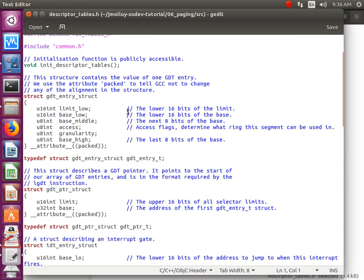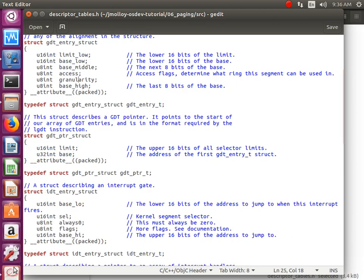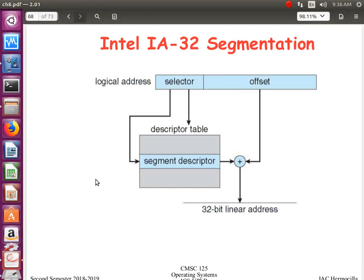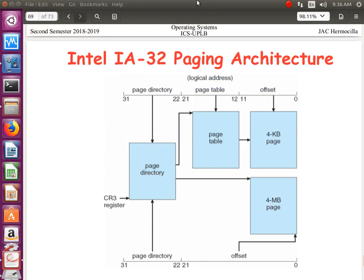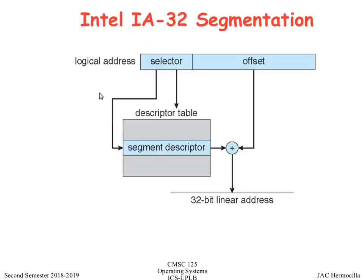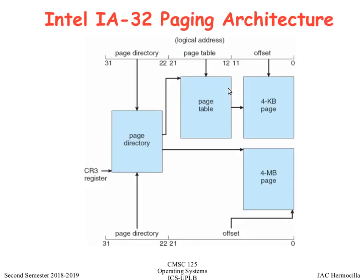This is the entry to the global descriptor table, which specifies the addresses for the segment along with granularity settings. After producing the 32-bit linear address, it is passed to the paging part. In the 32-bit architecture there is two-level paging: you have the outer page directory, the inner page directory, and then the actual offset in the page table.